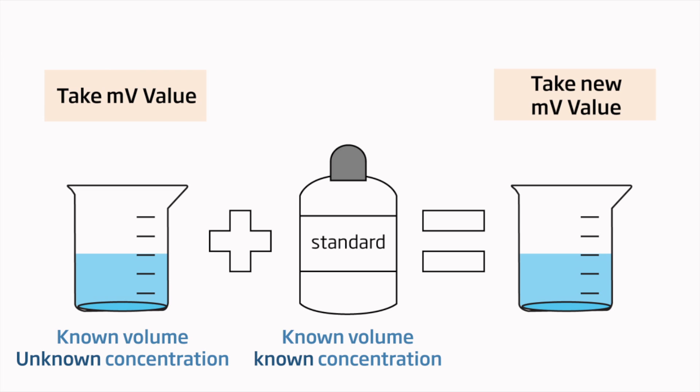An incremental method is a spiking technique that increases or decreases a sample concentration. This technique is usually used for samples with extremely high or low concentrations that would otherwise be too difficult to obtain an accurate reading due to the limits of the electrode's optimal measurement range. Additionally, incremental methods typically produce results that are more accurate and repeatable than those obtained from a direct measurement.